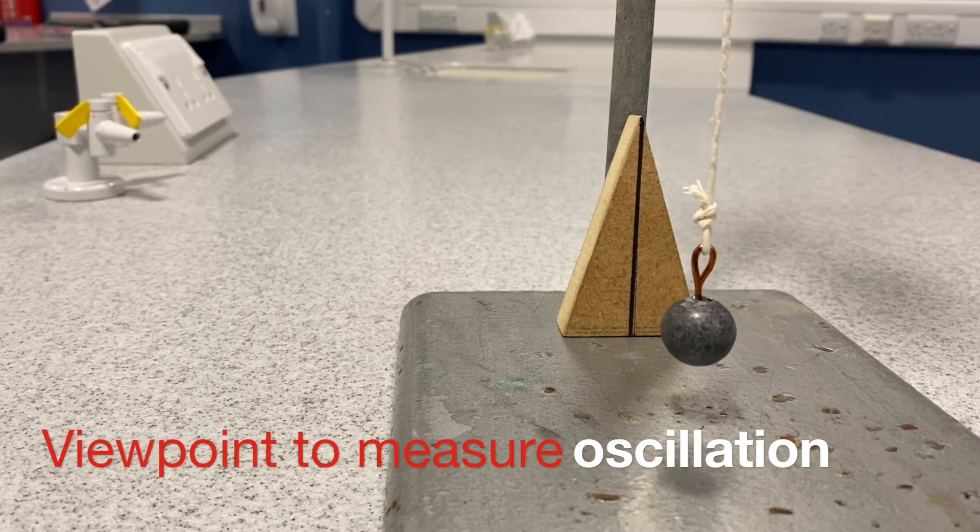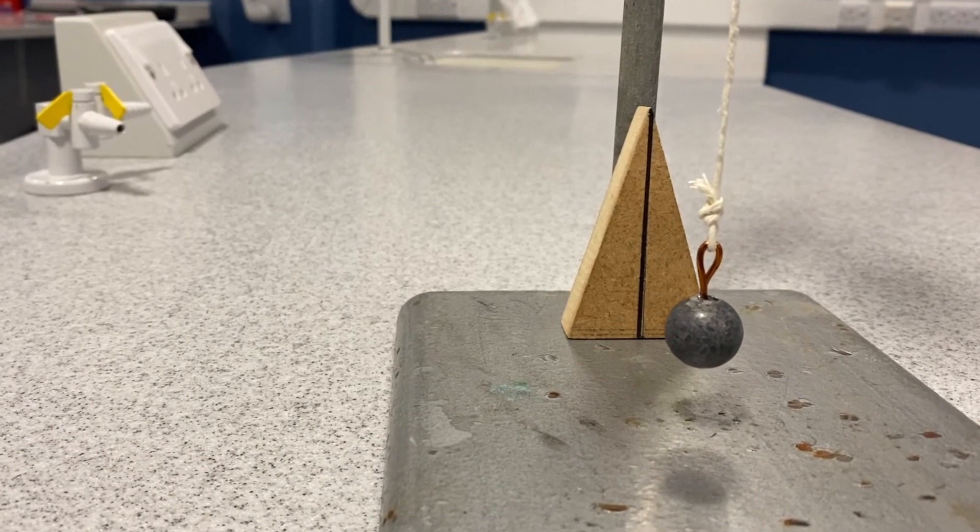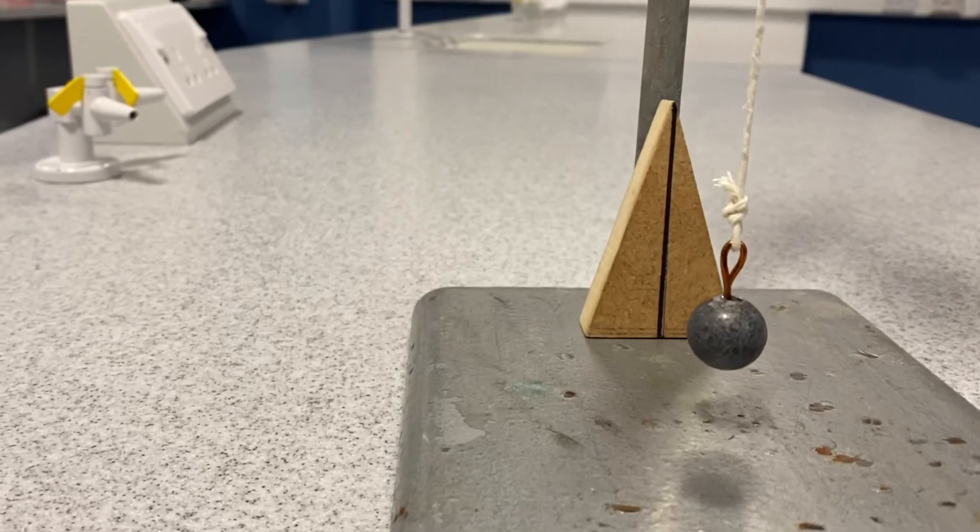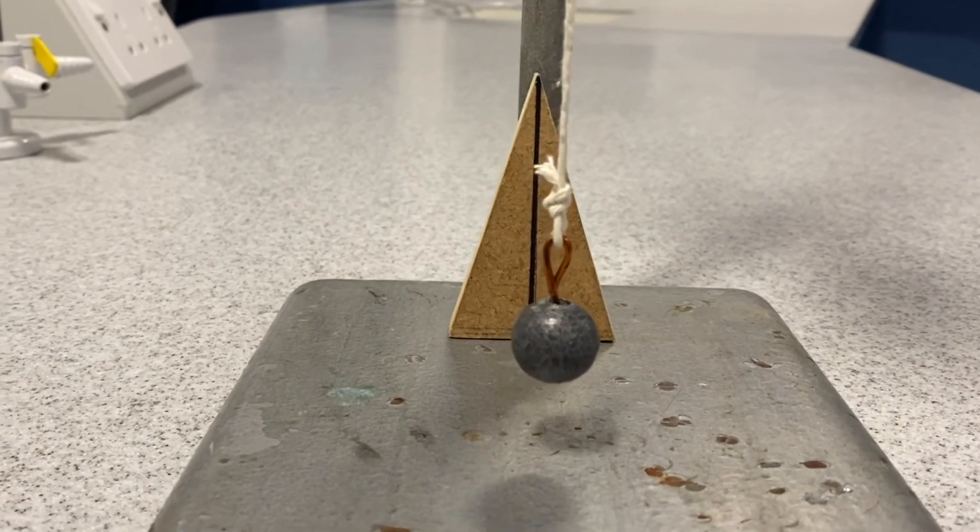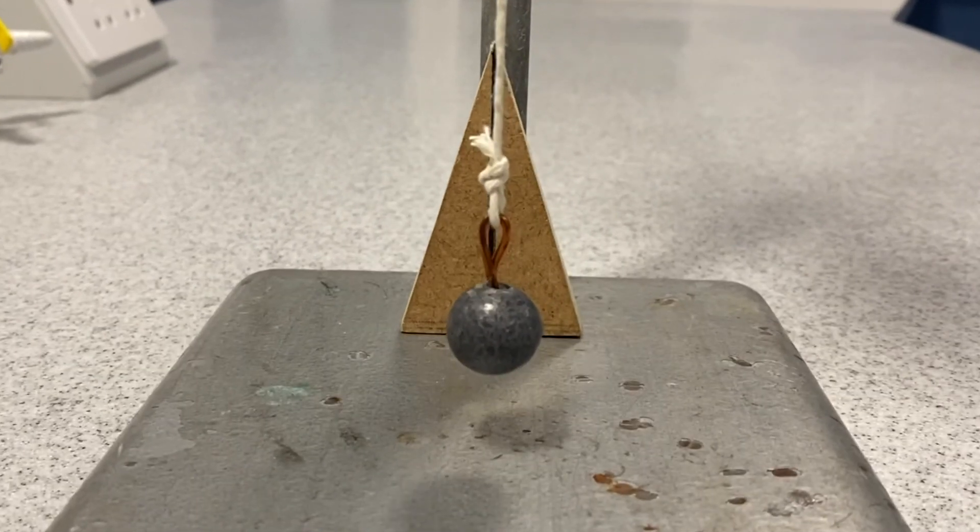In order to measure the time period of an oscillation, make sure that the viewpoint you choose is in line with the equilibrium position of the pendulum and is in line with the line on the fiducial mark.